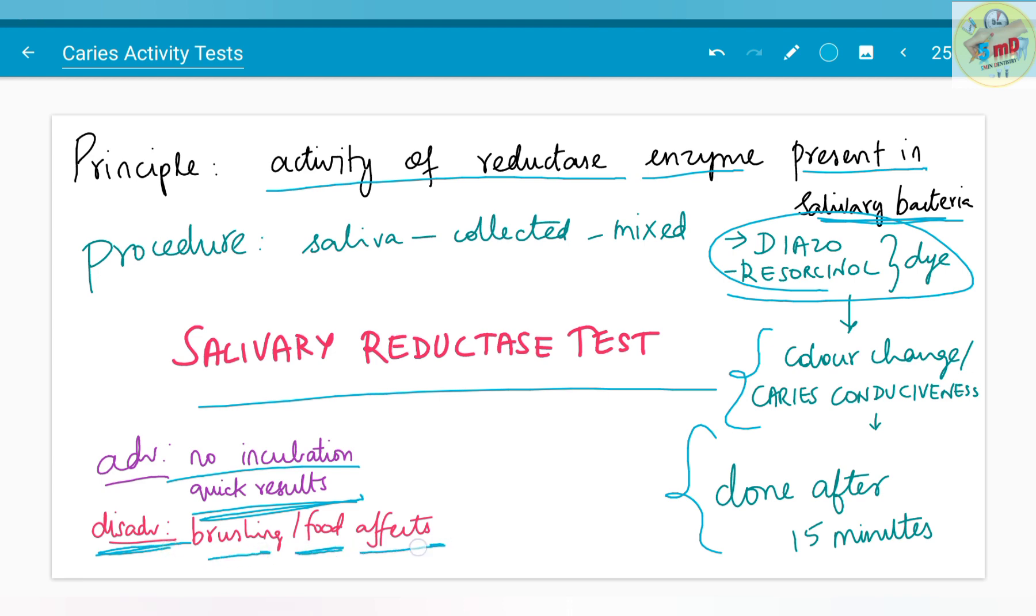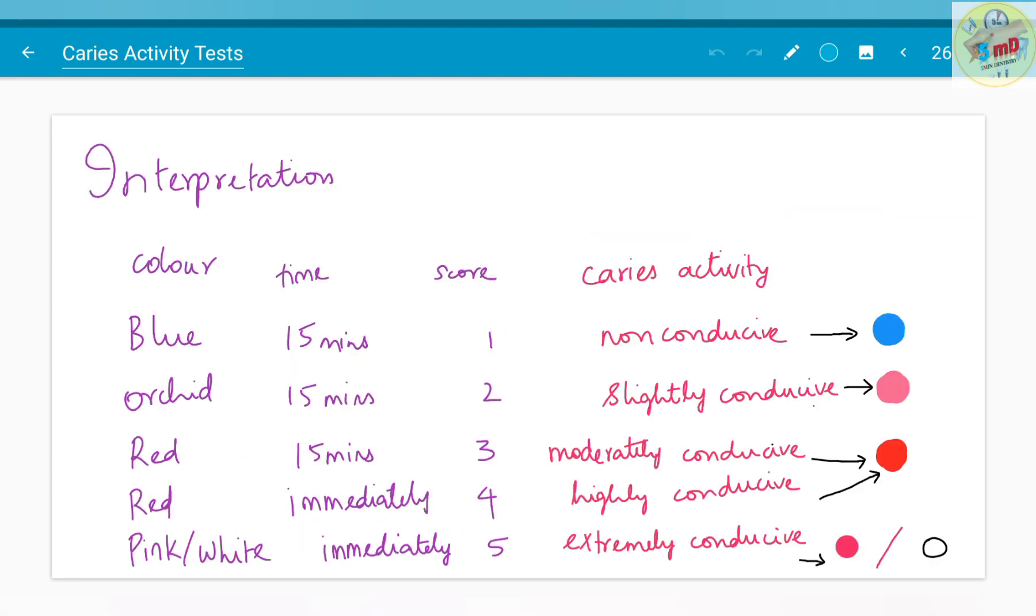The interpretation is as follows: the color change for the first 15 minutes, if it is blue, then the result is given as non-conducive and score of 1 is given. If the color change is orchid, then slight conducive nature of the individual is noted and score is given as 2. Even after 15 minutes, the color is red, then score is given as 3 and moderately conducive nature is noted.